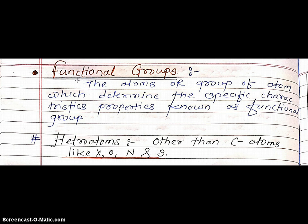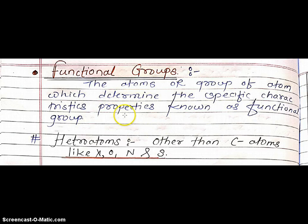Today we will study functional groups and the nomenclature of functional groups in detail. Functional group means the atoms or group of atoms which determine the specific characteristic properties of an organic compound, known as functional groups. Other than carbon atoms are known as heteroatoms — like halogens, oxygen, nitrogen, and sulfur.